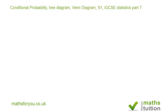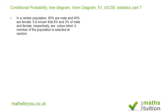Welcome to this exercise on conditional probability, tree diagram and Venn diagram — an S1 IGCSE type statistics question. In a certain population, 60% are male and 40% are female. It is known that 8% of men and 3% of females are colorblind. A member of the population is selected at random. Part A says: find the probability that this person is colorblind.